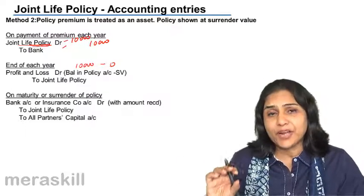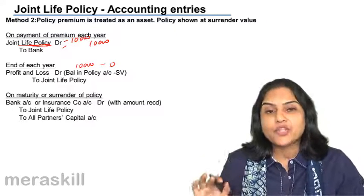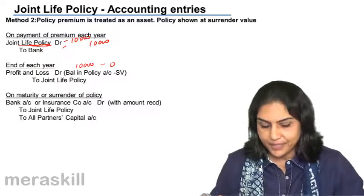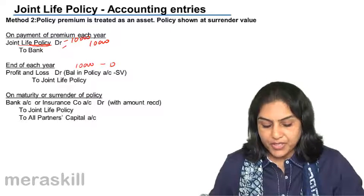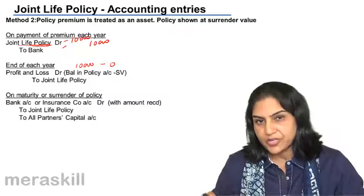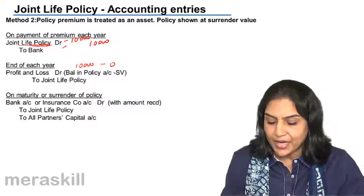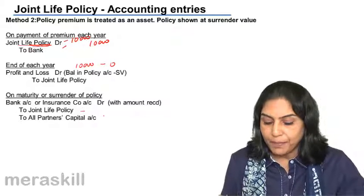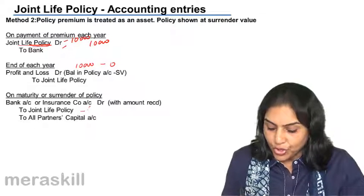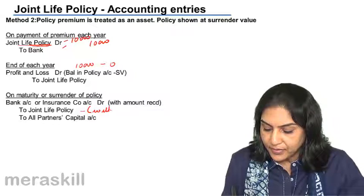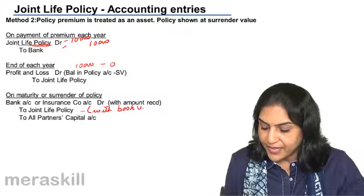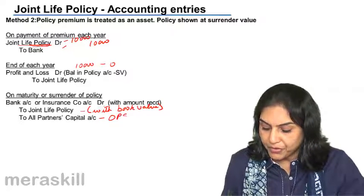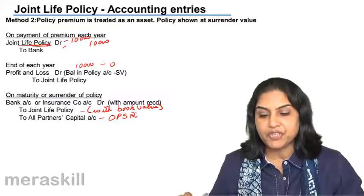But in year 2 there will be some value, and in year 3 there will be a higher value and so on. The joint life policy will be maintained at the surrender value of the asset. On maturity or surrender of the policy, money comes in. So, bank account is debited and insurance company account is debited to joint life policy account and all partners' capital accounts. Bank account is debited with the amount received, joint life policy account is credited with book value, and the difference goes to the partners' capital accounts in the old profit sharing ratio.